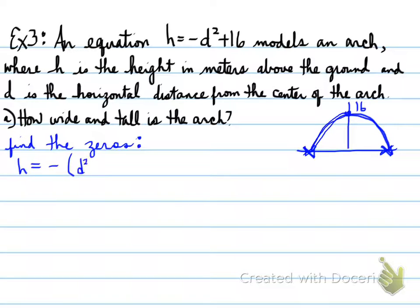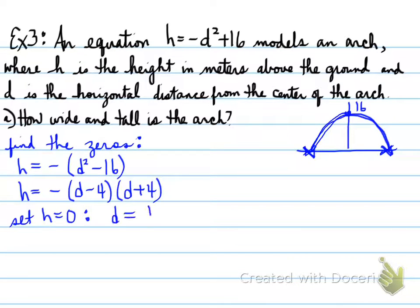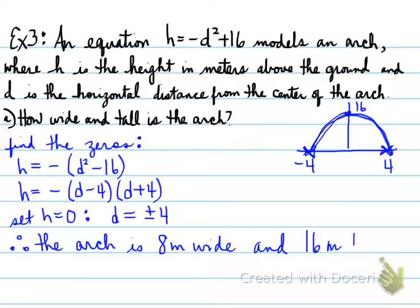So, we need to find the zeros, so we set the height equal to zero, we factor the equation, and we get the factors here, and our d values will be 4 and negative 4, positive 4 and negative 4. So, now we have to determine the width of this arch. Well, it goes from negative 4 all the way up to 4, means that the width of this entire arch is actually 8 meters wide and 16 meters tall. And that we were able to determine from the equation and the way it described what the equation represented.